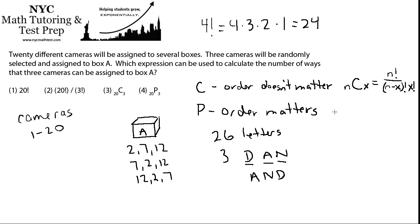And for a permutation, we would write N P X. It's still N factorial, but now it's only over N minus X factorial. That extra X factorial gets added for the combination because there's less combinations than permutations.